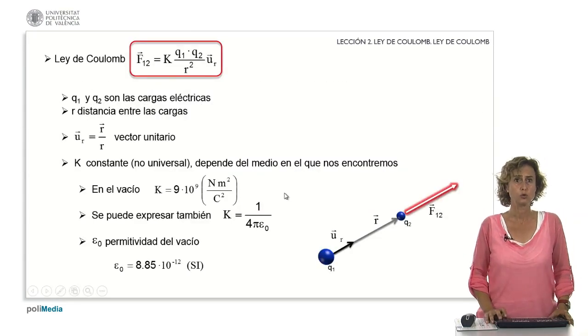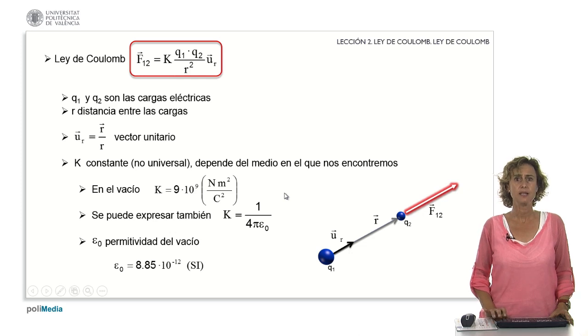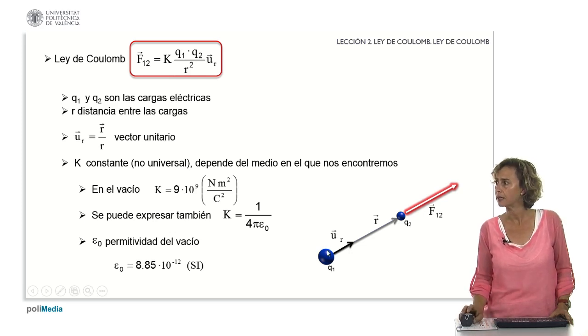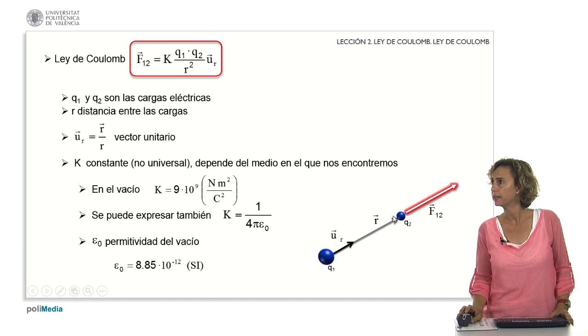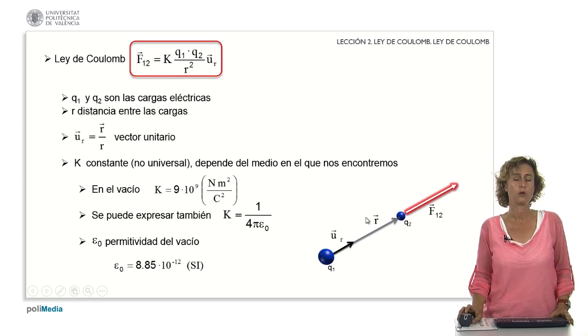Let us now comment on it. In Coulomb's Law, Q sub 1 and Q sub 2 are the electric charges. r is the distance between the charges from here to here. U sub r is a unit vector. We'll calculate it as the vector r divided by its modulus. r is the vector that goes from Q sub 1 to Q sub 2. And the modulus is nothing more than this distance. So the vector U sub r will go in that direction and sense.